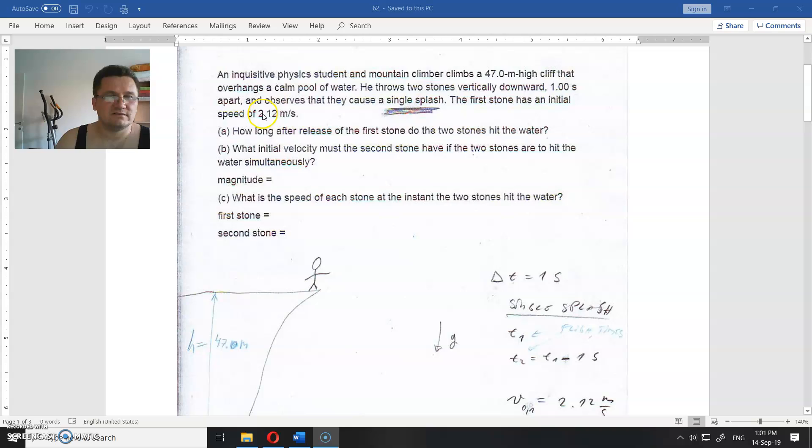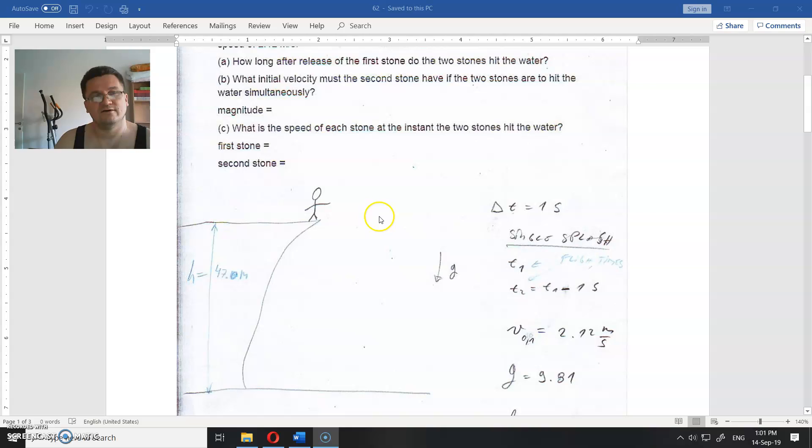The first stone is thrown down at 12 m/s, the second stone is thrown down at an unknown speed, but it is thrown one second later, and then they hit the surface of the water at the same time.